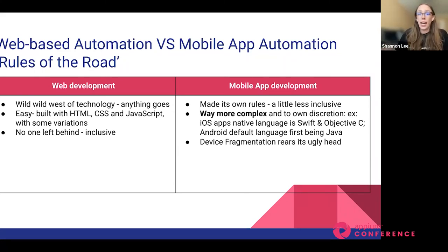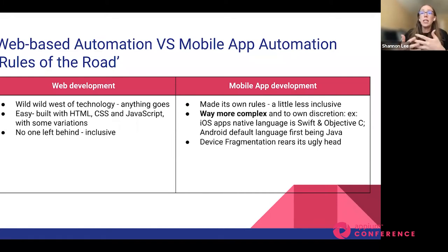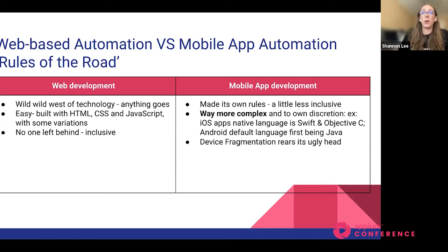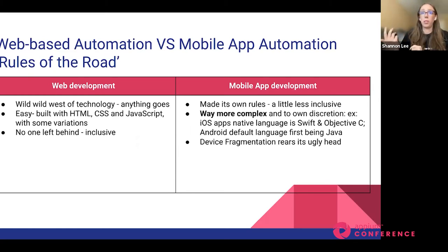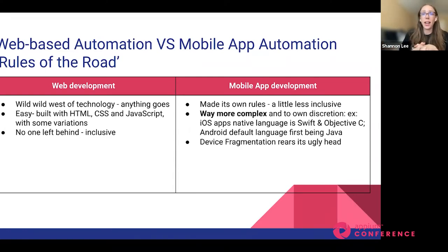As mobile apps developed, we see a difference. Android and iOS are the two leading the market, and they made their own rules for their applications — a little bit less inclusive, with Apple being the best example. Mobile applications are also far more complicated by nature. Android apps are developed in Java while iOS apps are in Swift and Objective-C — already a huge divide. Then add all the different devices, operating systems, and versions. Device fragmentation is now rearing its ugly head and can be a huge hindrance to mobile testing and automation.